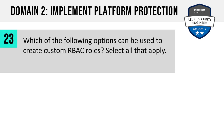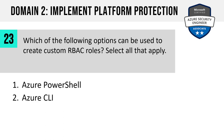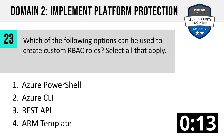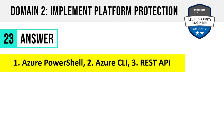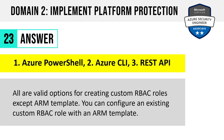Number 23. Which of the following options can be used to create custom RBAC roles? Azure PowerShell, Azure CLI, REST API, or ARM template? Select all that apply. Custom RBAC roles are a distinct skill measured, so you can expect multiple questions — get very familiar with hands-on creation. The answer is Azure PowerShell, Azure CLI, and REST API: numbers one, two, and three. These are all valid options for creating custom RBAC. You can also configure an existing custom RBAC role with an ARM template.